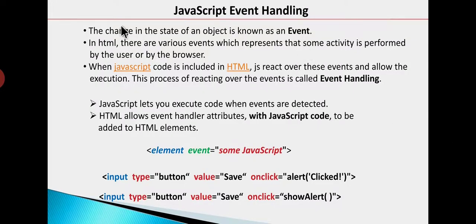Let's see what is an event. The change in the state of an object is known as an event. For example, if we look at the mouse, the cursor is in the current state. The cursor can move and then the state changes — this is what is an event.